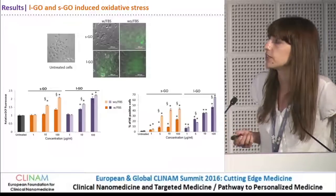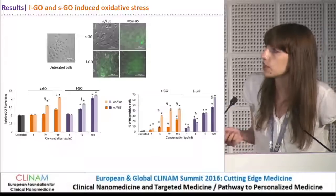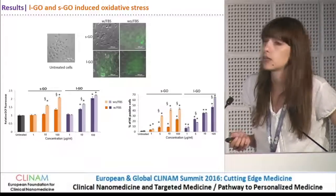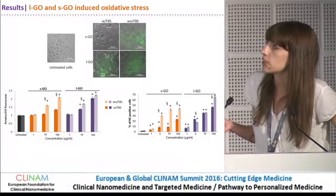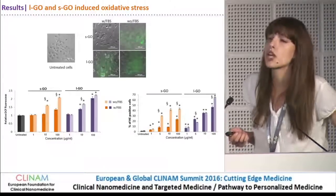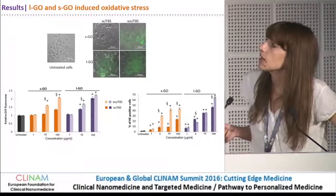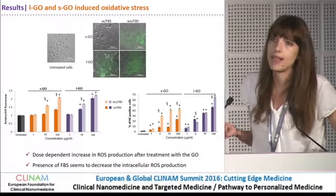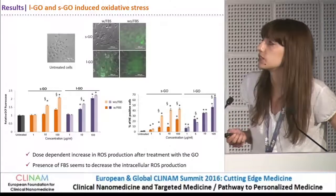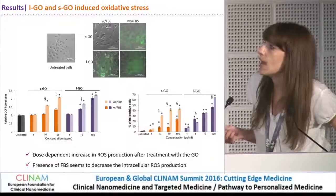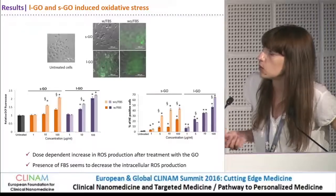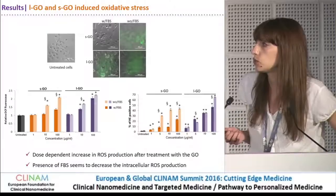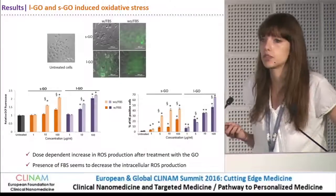Using flow cytometry with a different color dye, we again saw the same trend: there is an increase in intracellular ROS production, especially after treatment with both small and large graphene oxide in the absence of serum. Comparing, large graphene oxide seems to induce more intracellular ROS compared to the small. One more remarkable finding was that the presence of serum seems to decrease intracellular ROS production.